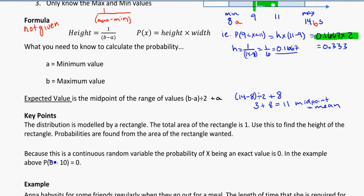So in the example above, the probability that x is equal to 10 will be 0. We can't have exactly 10 seconds. The probability for exactly 10 seconds will give us 0.